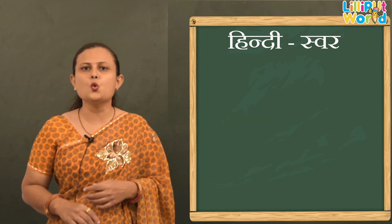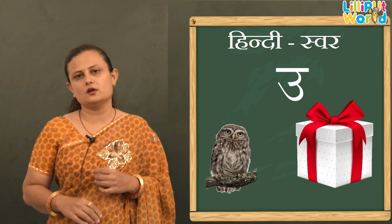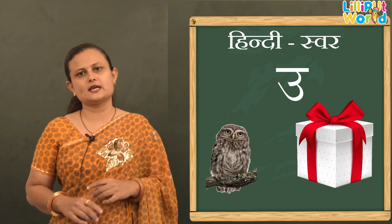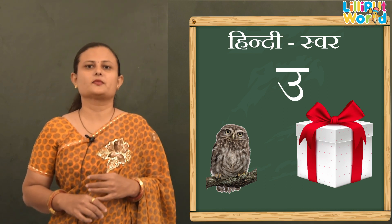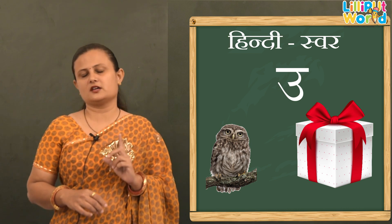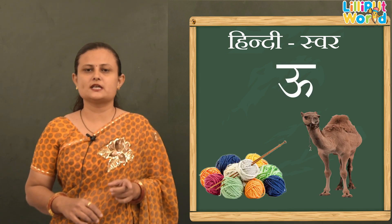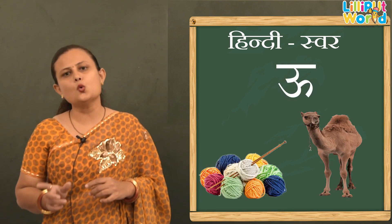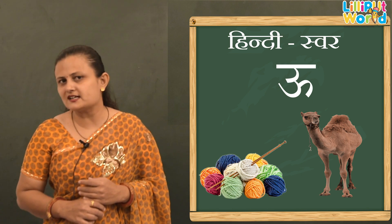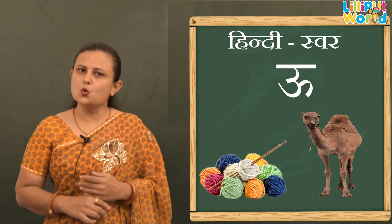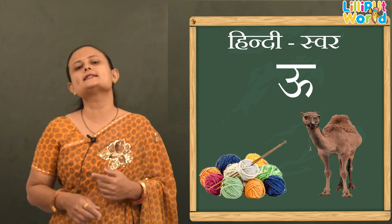Now छोटा उ — U se Ullu, Ullu means owl. U se Uphar — jab aapki birthday hoti hai to aapko gift milti hai na? Toh us gift ko Uphar bolte hain. Now बड़ा ऊ — Oo se Oon, Oo se Oot. Oon means wool — jab hume thandi lagti hai to sweater pehnte hain, aur sweater Oon se banta hai. Aur Oot means camel.